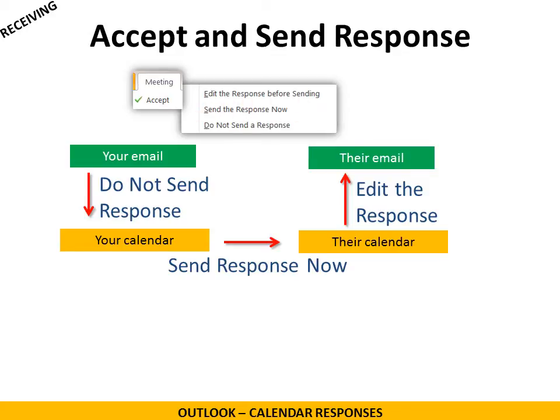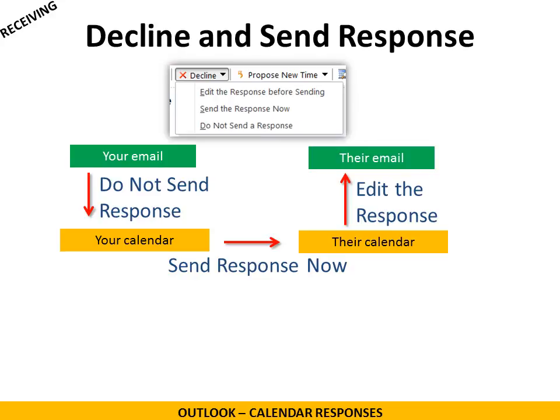Accepting removes the email from the inbox and adds the event to your calendar. It works just the same way if you decline — you have the same three options, so make sure you choose the appropriate one. 'Send the response now' would be the best option. Declining removes the email from the inbox and the event from your calendar, so you won't see it at all once you've declined.